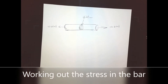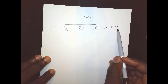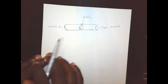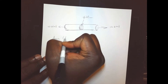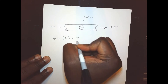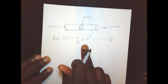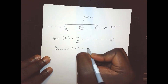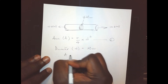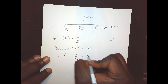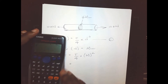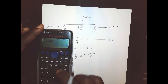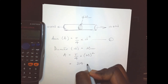Let's look at our stress problem regarding the bar being subjected to a tensile force of 10 kilonewtons. The diameter of the bar is given as 20 millimetres. The first thing we have to do is work out the cross-sectional area. The area of the bar is equal to pi over 4 times d squared, where d is the diameter. So the area equals pi over 4 times 20 squared, which gives 314.16 millimetres squared.